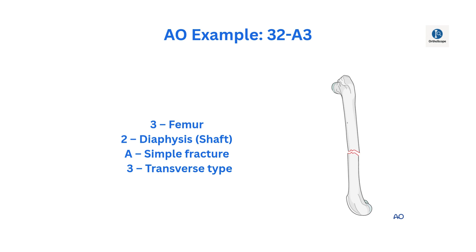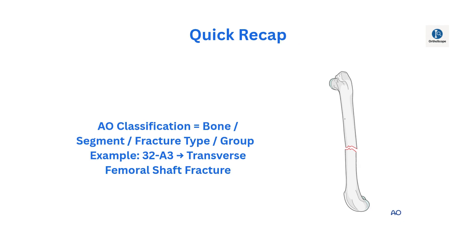Let's take the code 32A3. Three means femur, two means the diaphysis or shaft, A means it's a simple fracture, three indicates that the fracture is transverse.